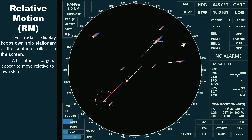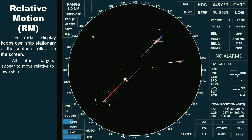Now let's switch back to our original setting, with the trail set to true. In this mode, the trails of stationary objects disappear, while the vessel ahead will now display its trail, reflecting its true movement over time.